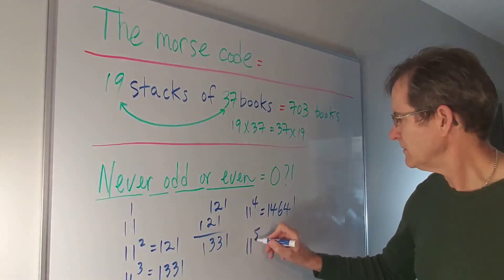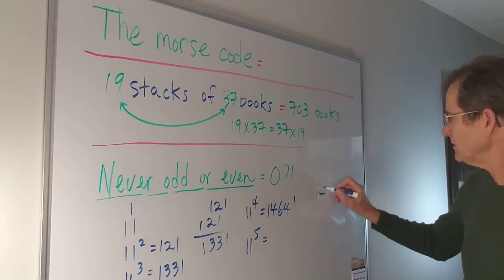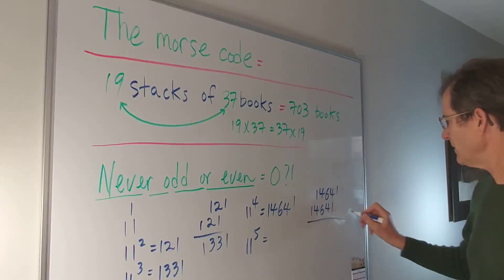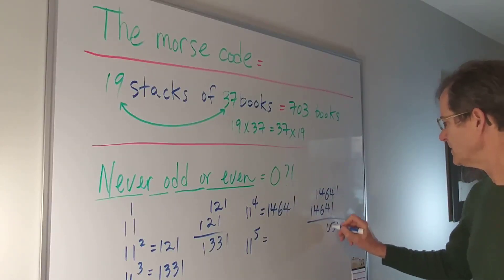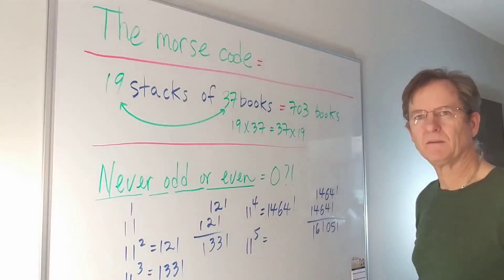About 11 to the five. Well let's try the trick. It's going to be a palindrome, right? Well let's see, one five ten carry one one. Whoa. Hmm, it's not a palindrome. Something breaks down here because we have to carry.